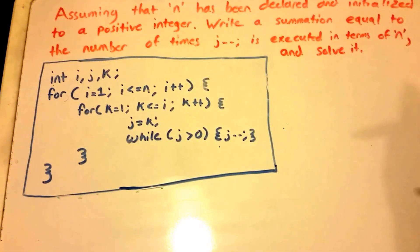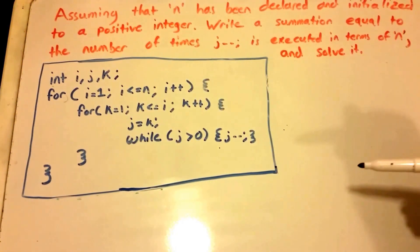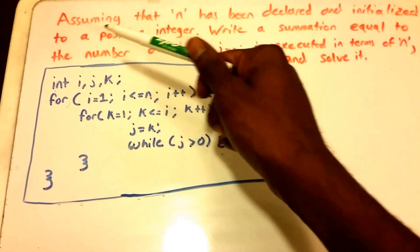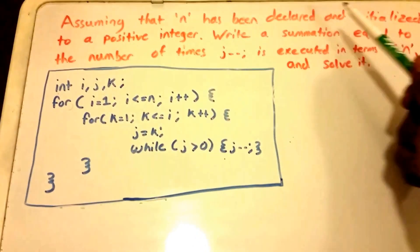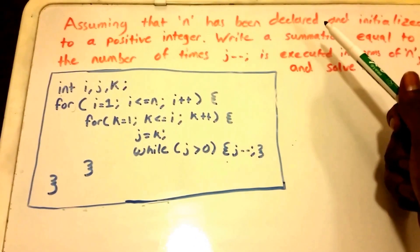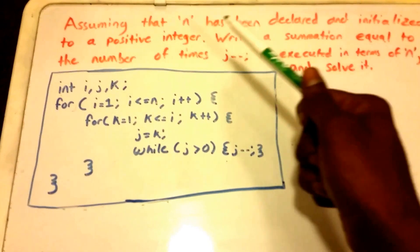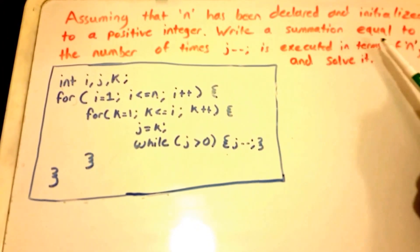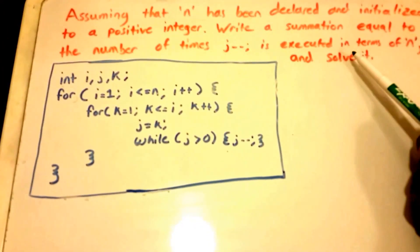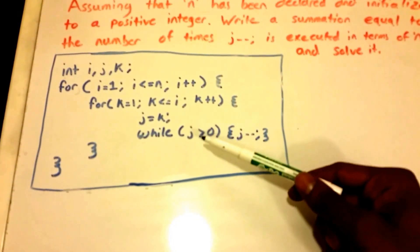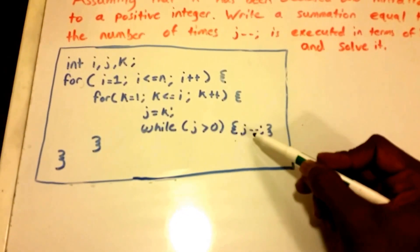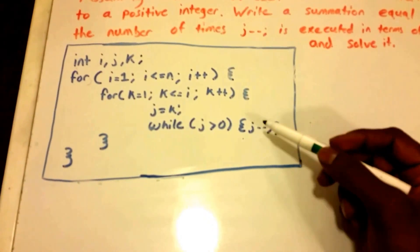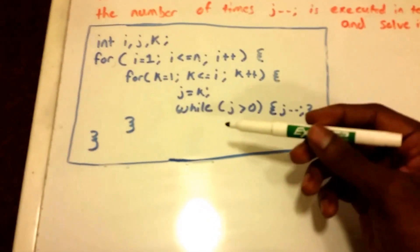Hey guys and welcome to this video on algorithm analysis. Here I have a problem: assuming that n has been declared and initialized to a positive integer, write a summation equal to the number of times that j-- is executed in terms of n, and then solve it. Here I have my code and you can see the j-- statement. Let's take a look at the code and see what it's doing.